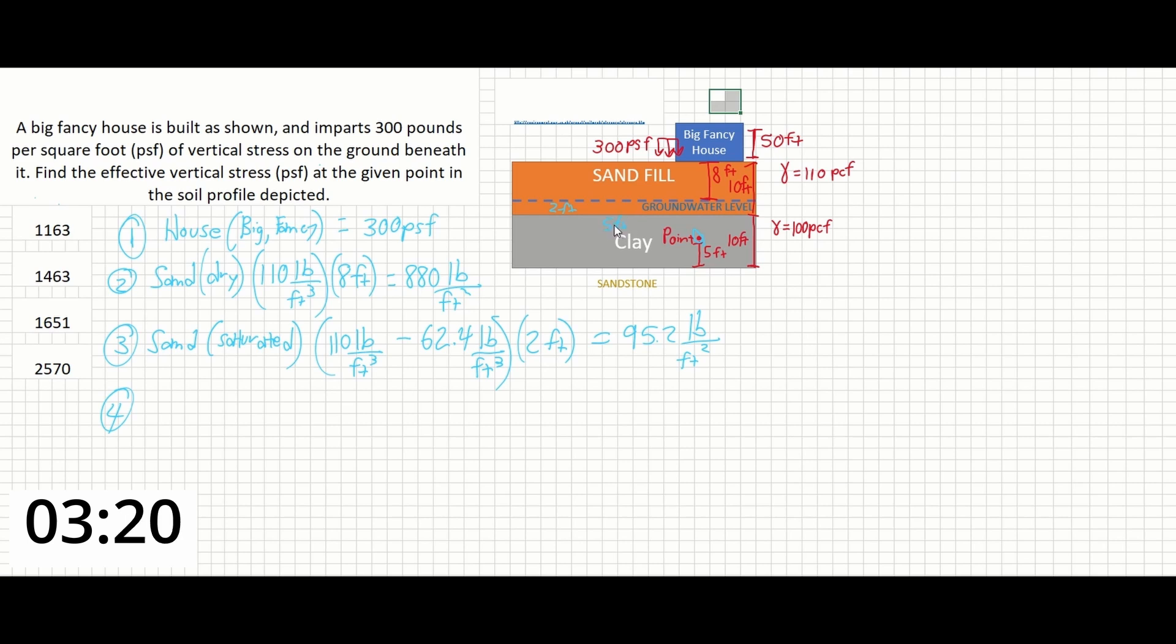Just as we did before with the saturated sand, we can subtract 62.4 from the unit weight of the clay and then multiply by the depth to which we are going. This will give us 188 pounds per square foot.